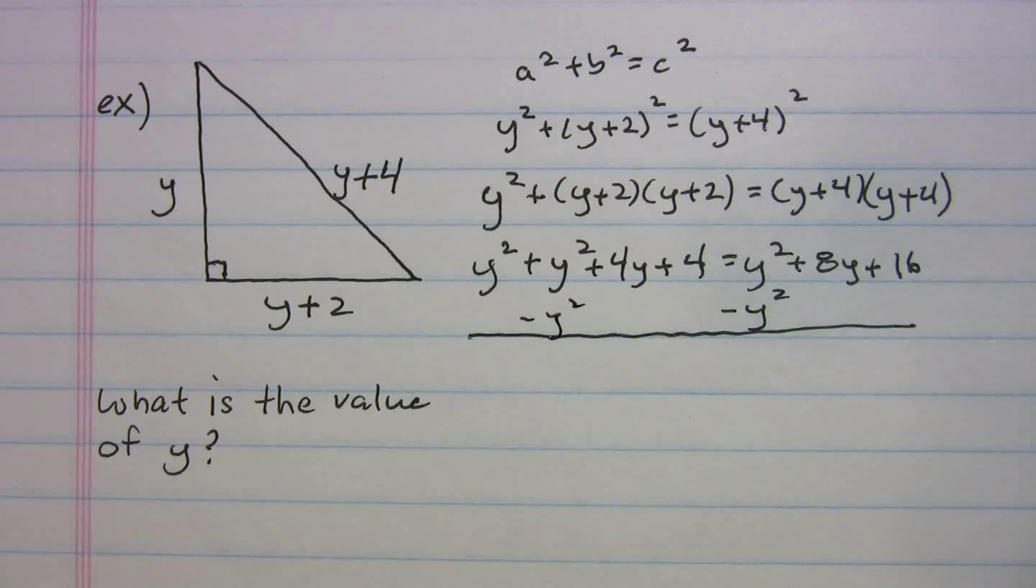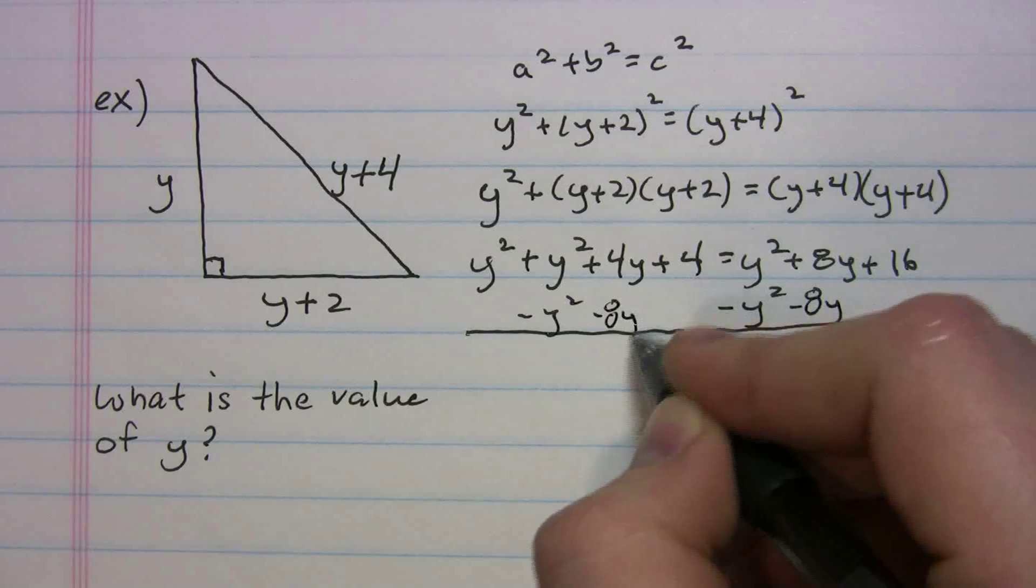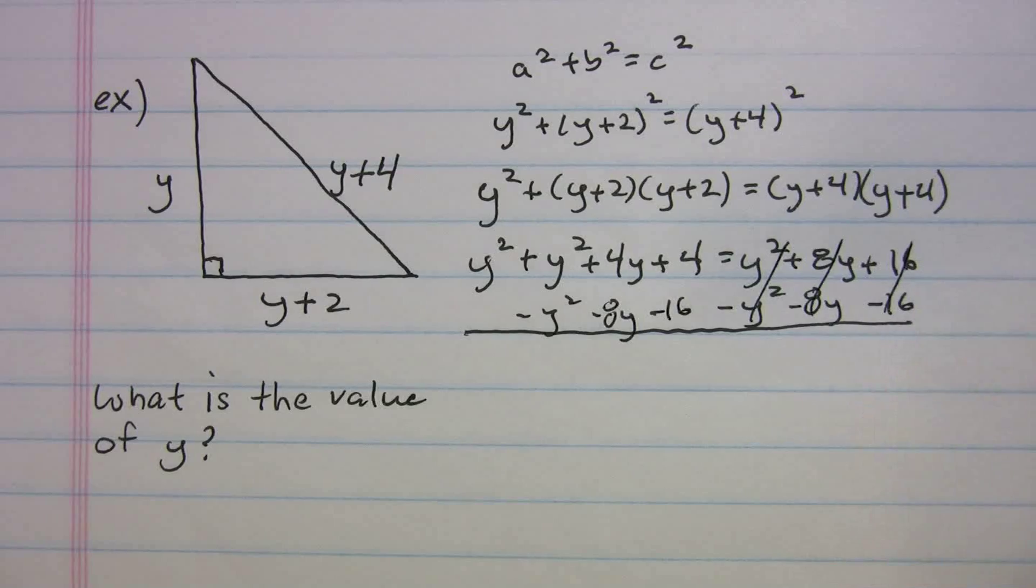We can start minusing things minus the, and I'll do everything in one shot just to save time. So I'll minus the y squared minus the 8y minus the 16 just to save time. So all that crosses out.